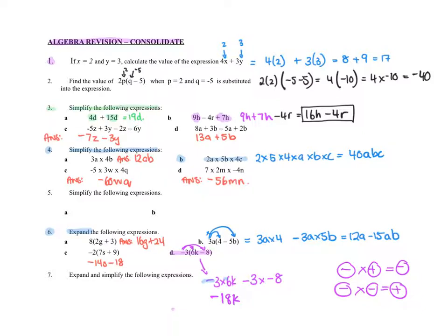Now here, the next one, I've got a negative by a negative, so I'm going to get a positive. So I'll get positive 24.